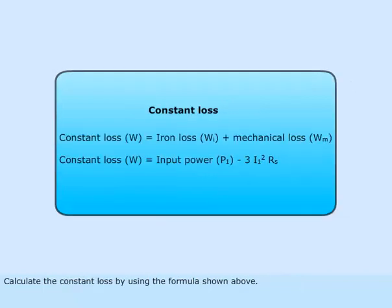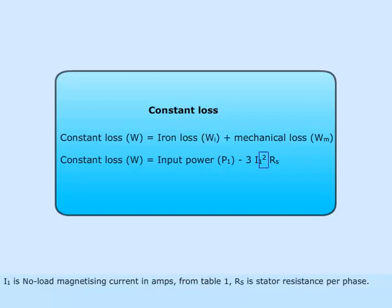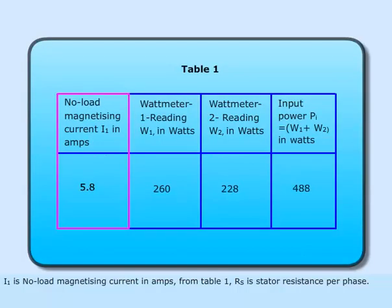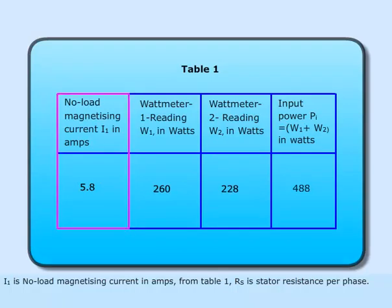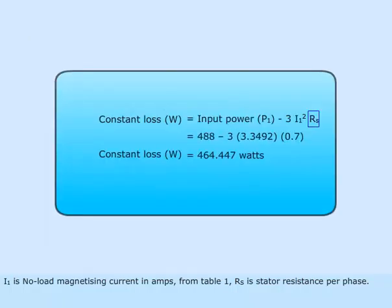Calculate the constant loss by using the formula shown above. I1 is the no-load magnetizing current in amps from table 1, and R1 is the stator resistance per phase.